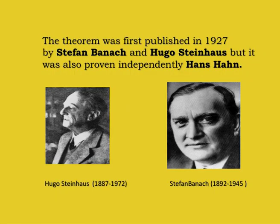The Uniform Boundedness Principle in its basic form asserts that for a family of continuous linear operators whose domain is a Banach space, pointwise boundedness is equivalent to uniform boundedness in operator norm. The theorem was first published in 1927 by Stephen Banach and Hugo Steinhaus, but it was also proven independently by Hans Hahn.